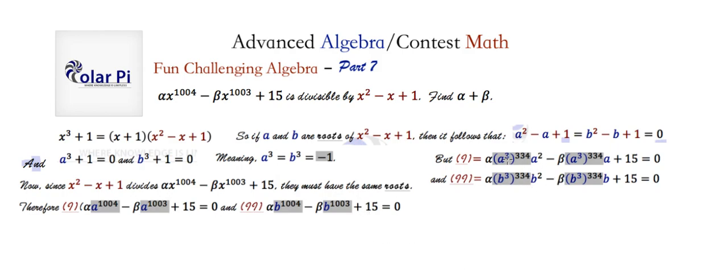Now, the reason why I wanted to go in this direction is because I know a cubed and b cubed are both equal to negative 1. So what I'm going to do is come here and replace a cubed with negative 1, and then replace b cubed with negative 1.